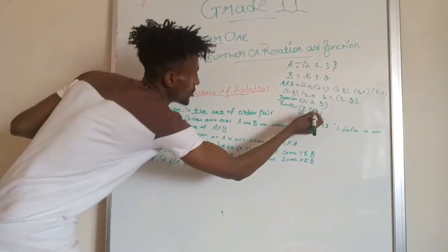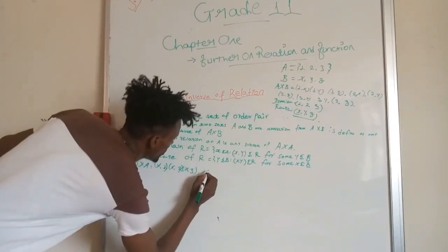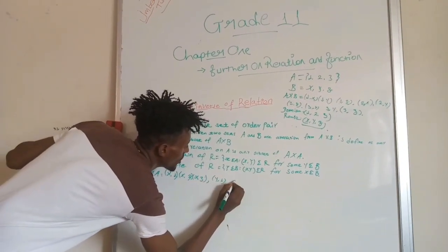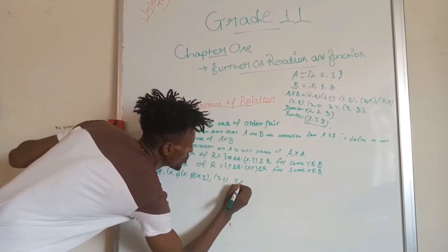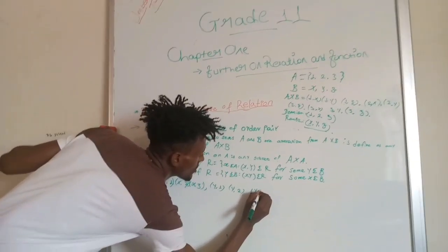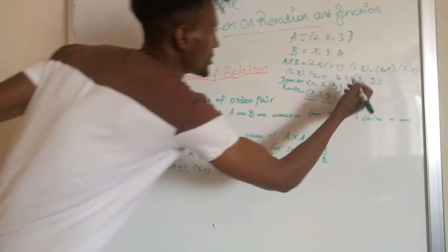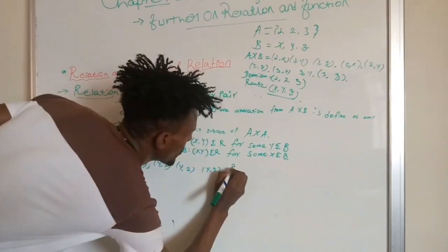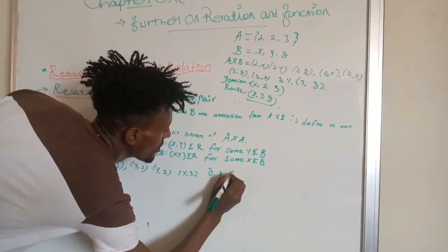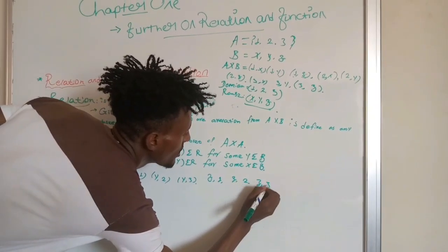Continuing the inverse ordered pairs: (Z, 1), (Y, 1), (Y, 2), (Y, 3), then (Z, 1), (Z, 2), (Z, 3).